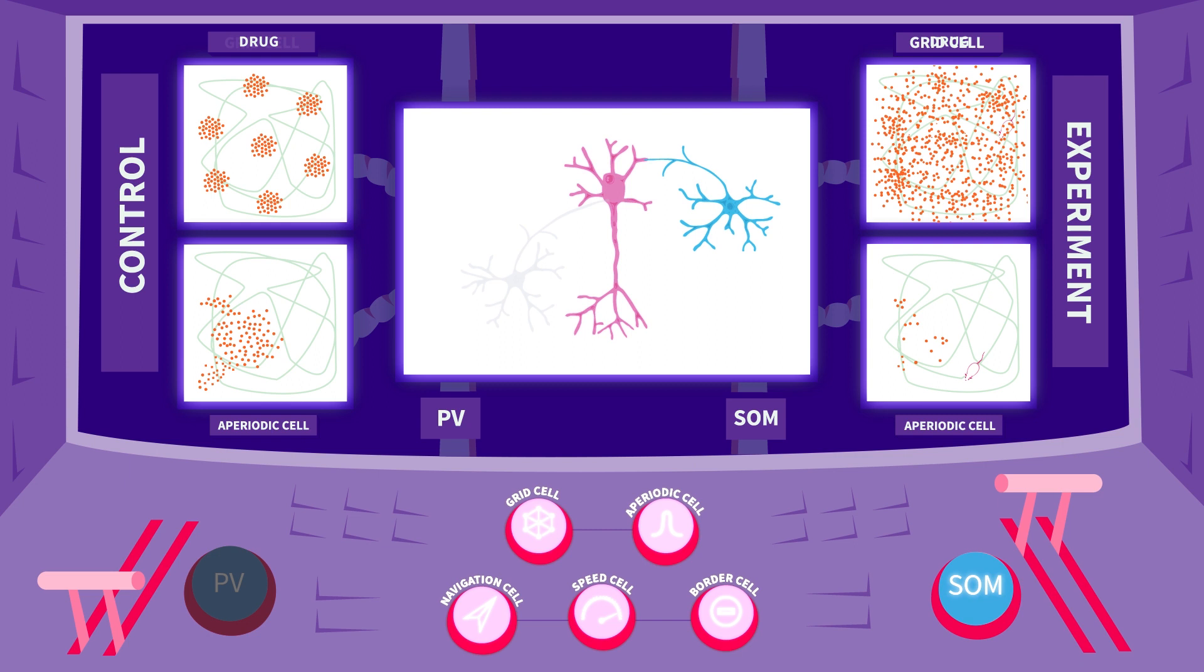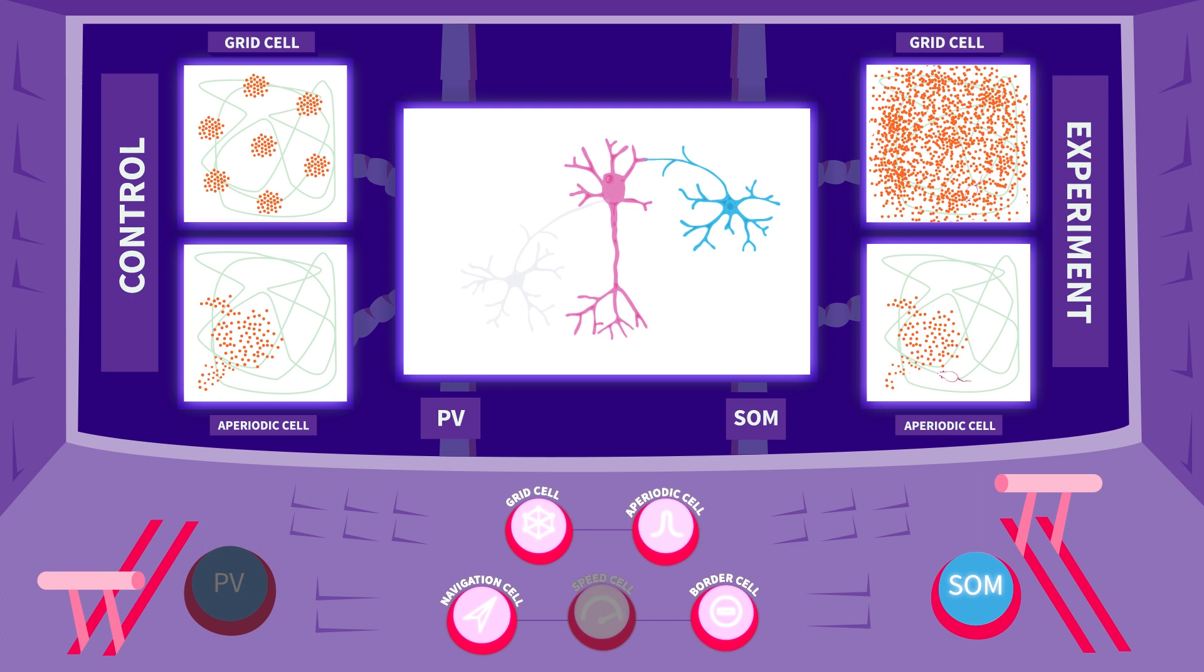Silencing the PV interneurons altered the grid cell's behavior, producing random signals that almost concealed the hexagonal grid pattern. Aperiodic cells were not affected.